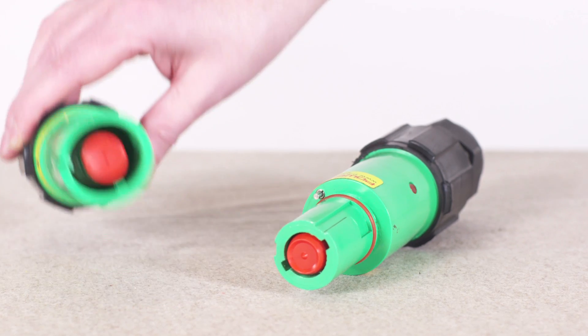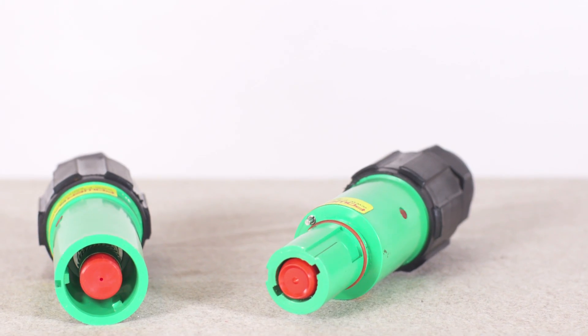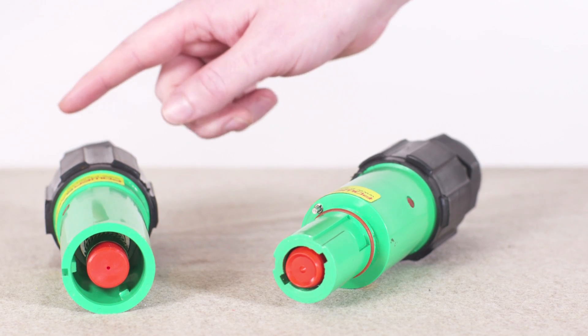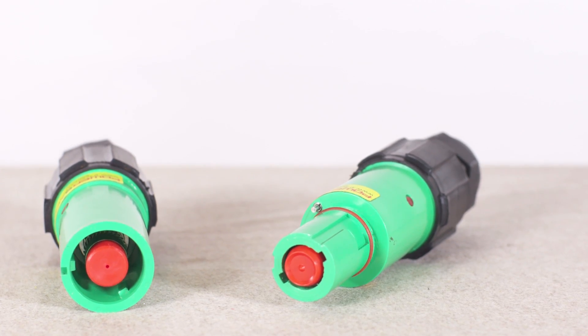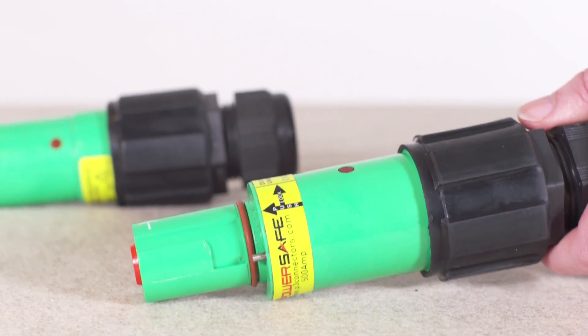PowerSafe connectors are designated as source or drain. The source connectors are intended to have their permanent connection in the direction of the source of electrical energy and the drain connectors are intended to have their permanent connection in the direction of equipment receiving power.